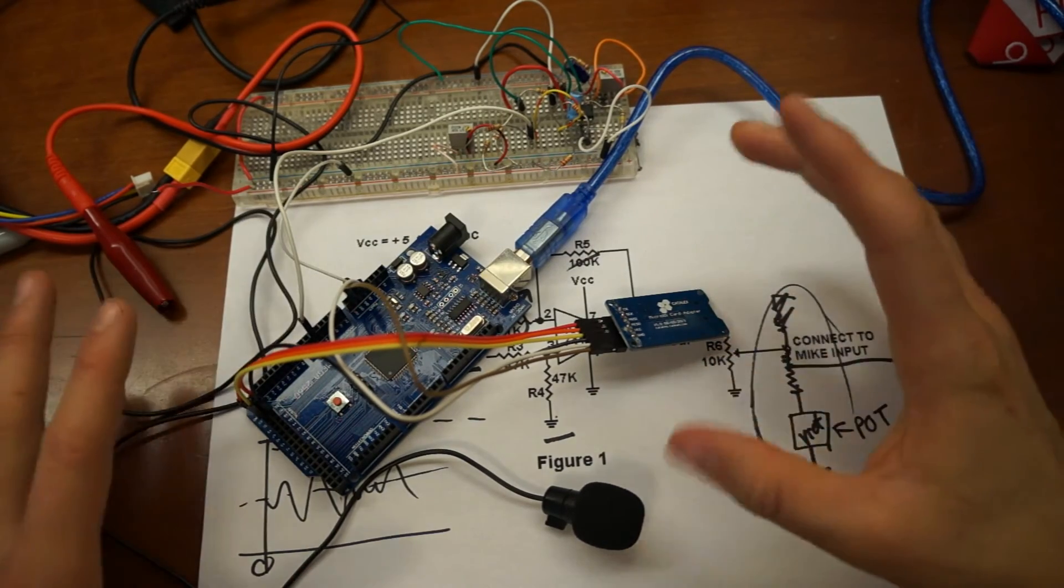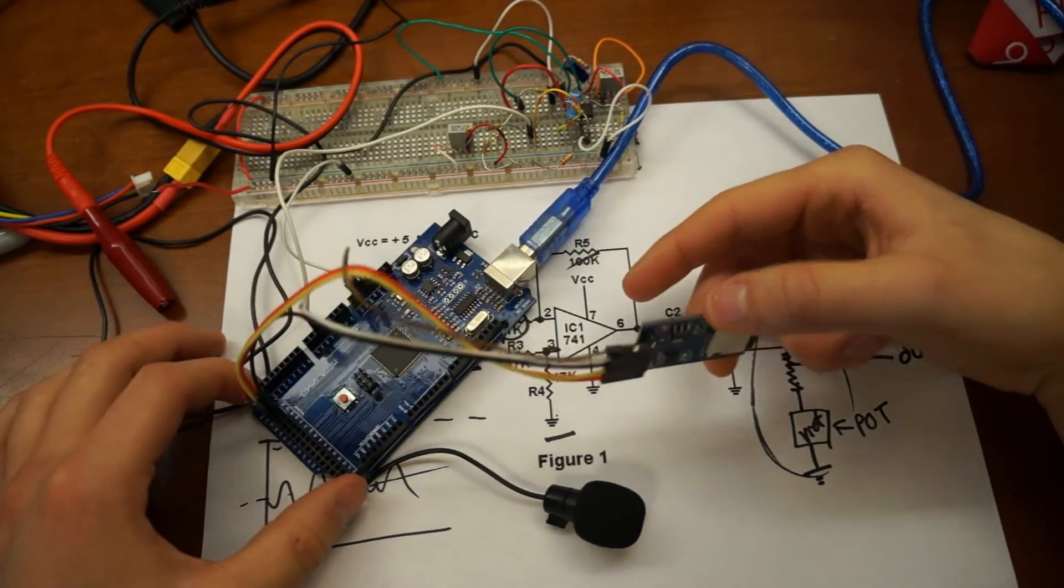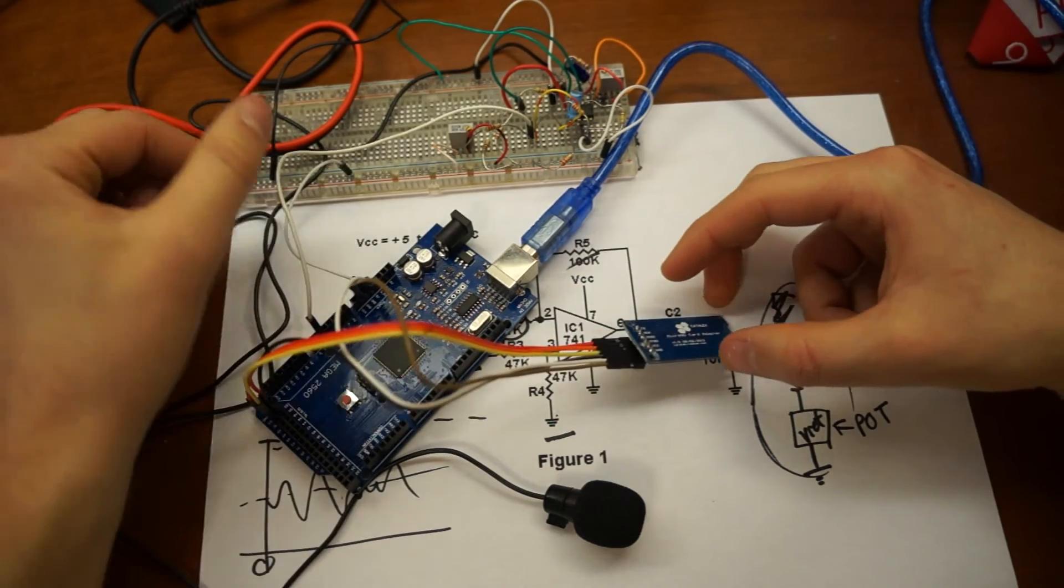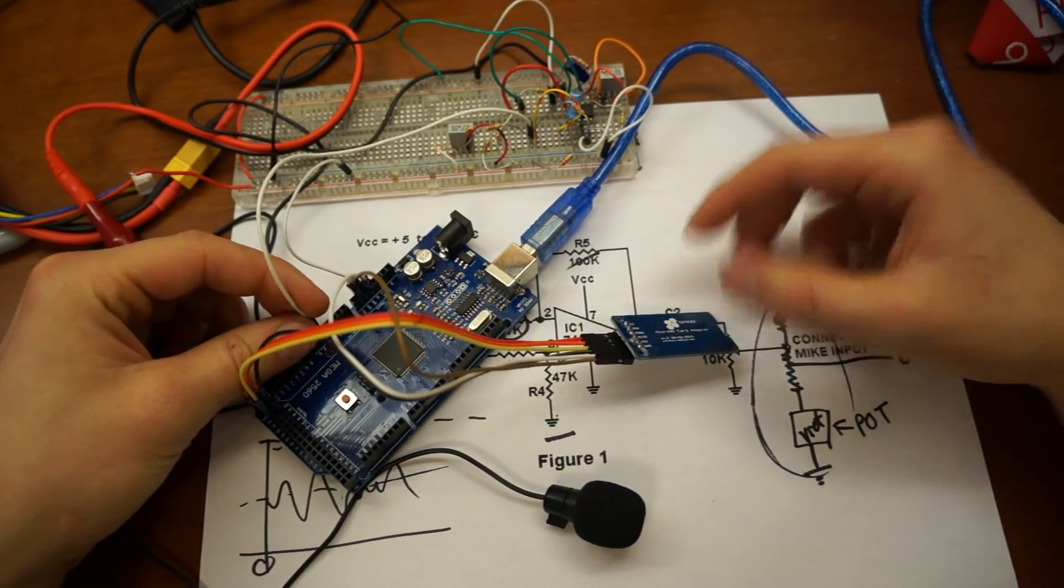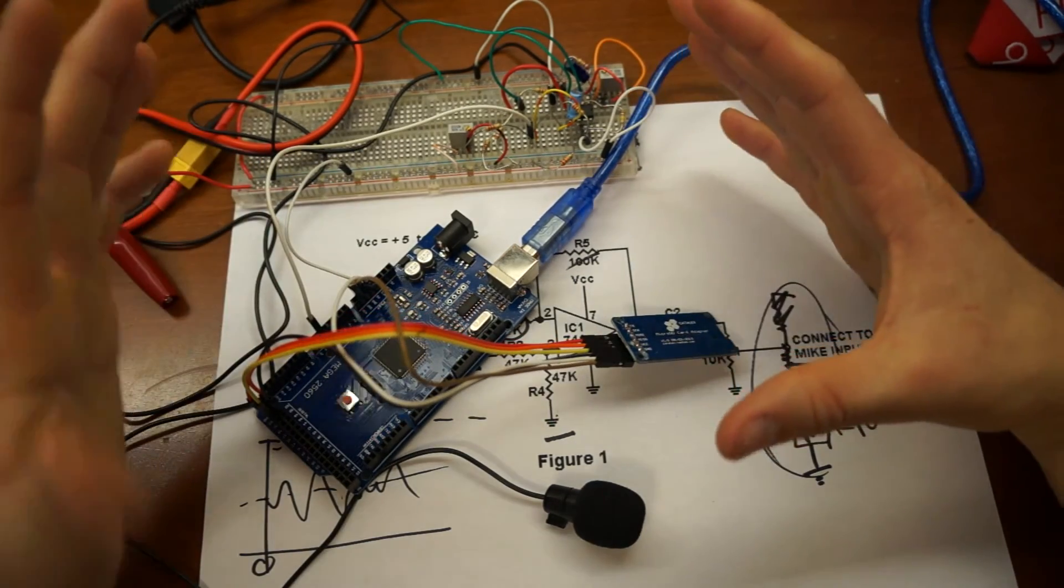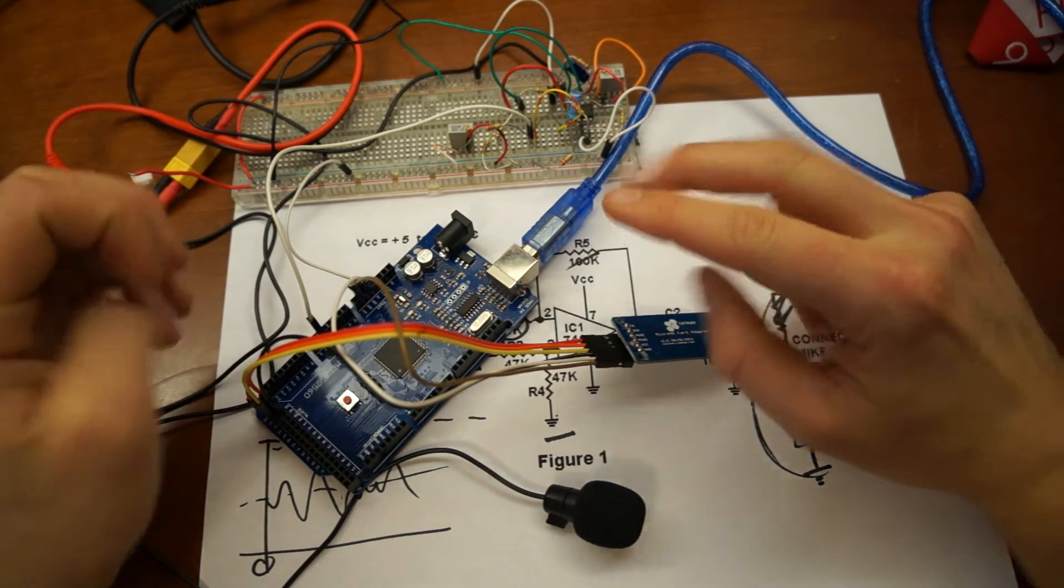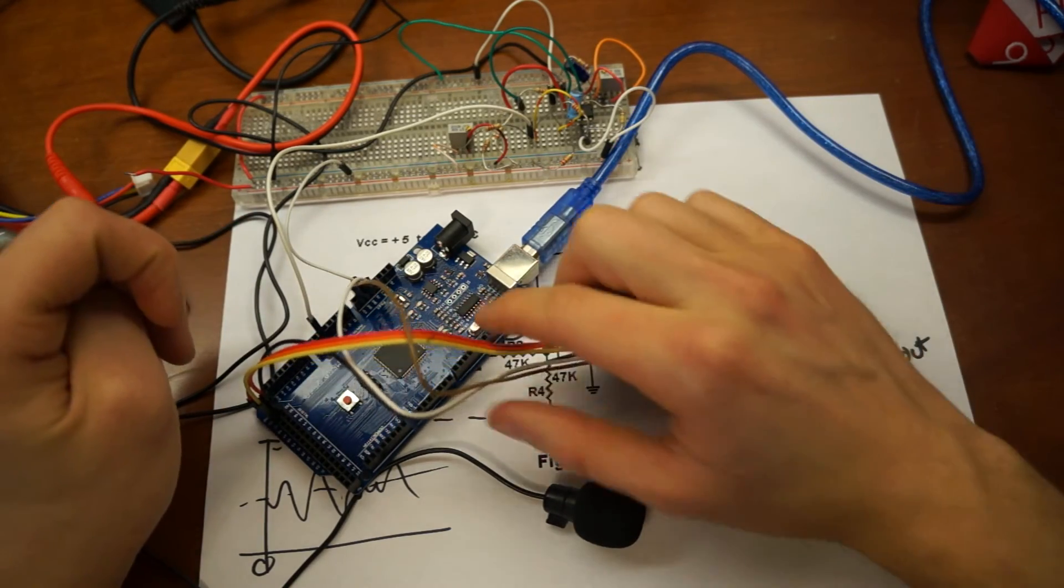But basically what it does is reads the analog information into a buffer. And that buffer is, there's two buffers that are stored in the flash memory of this chip.